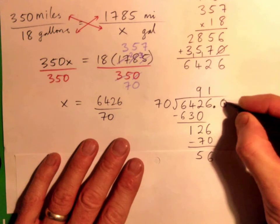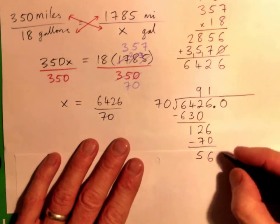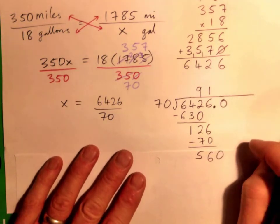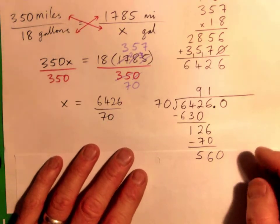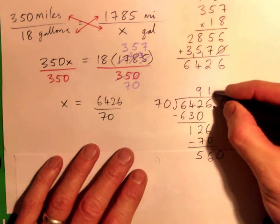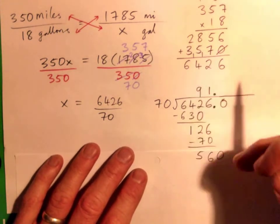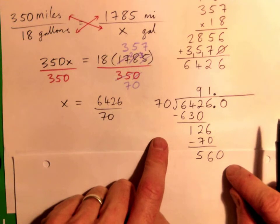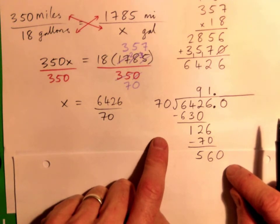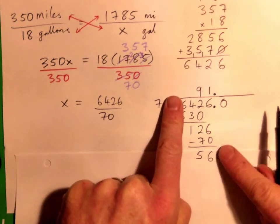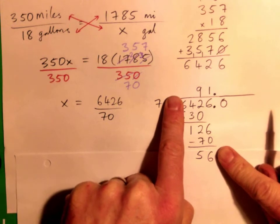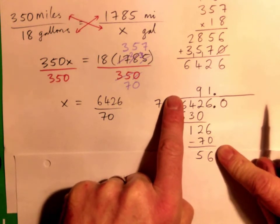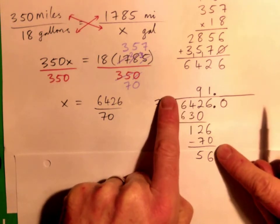And I'm gonna put a point zero on here so I can bring that down. The answer doesn't say round, so let's just do one more anyway. So 70 into 560, what do we get?